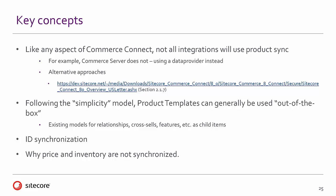The next major characteristic about products and the product model within Commerce Connect is that we're following a simplicity model. The product templates and product entities can generally be used out of the box, and we'll explore that a little bit as well.